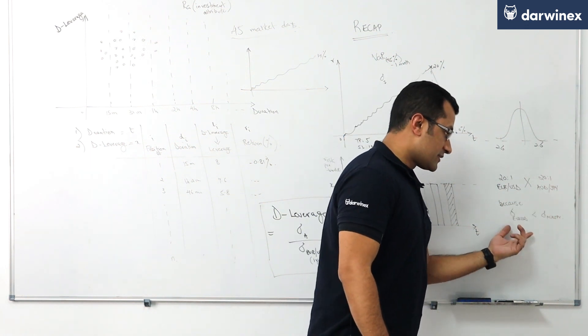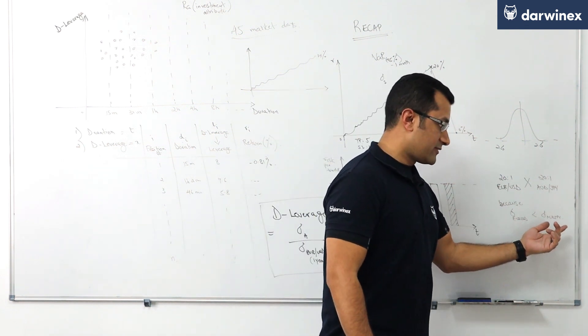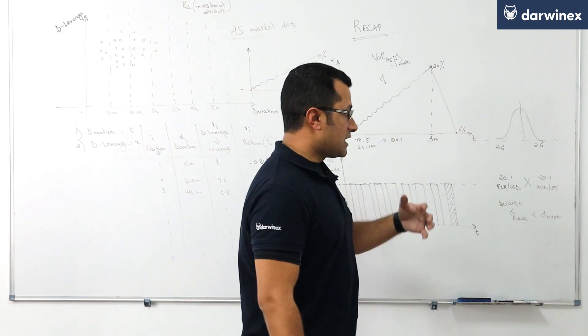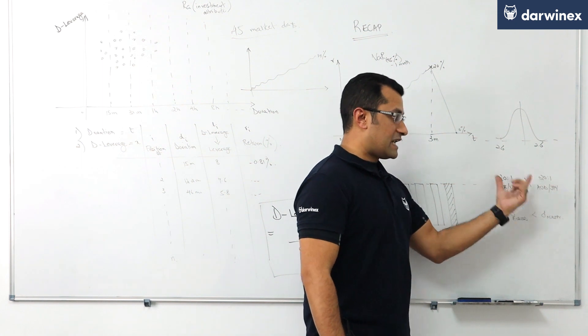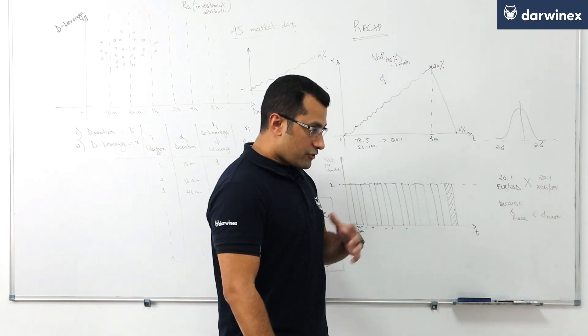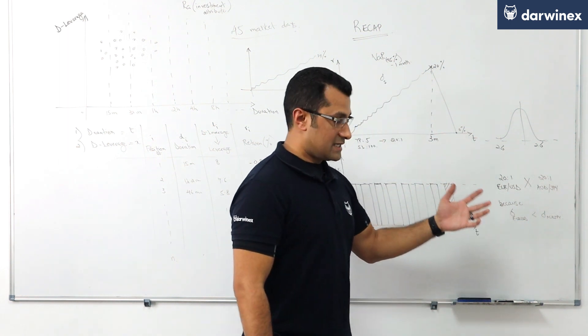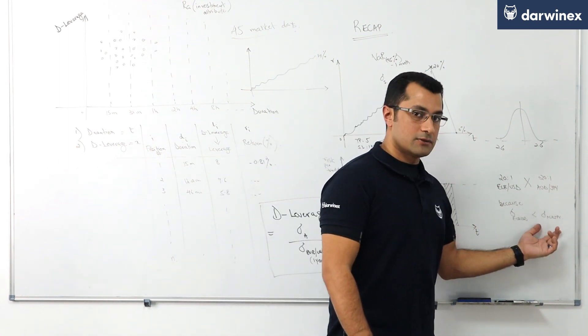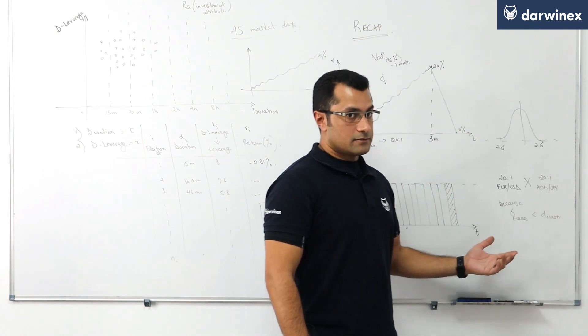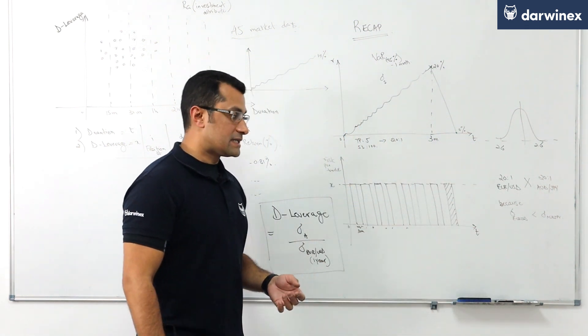Because the volatility of the euro dollar is significantly less than the volatility of the Aussie dollar Japanese yen. So even if you're assuming the same level of leverage on each trade, the risk of taking a 20 to 1 trade on the euro dollar is less than the risk of taking a 20 to 1 leverage trade on the Aussie dollar Japanese yen as a result of those differing volatilities.